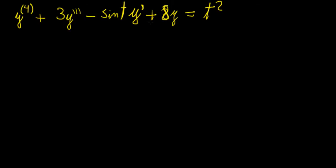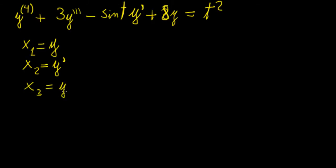Let's do a change of variables first. Let x1 equal y, then x2 equal the first derivative, then x3 equal the second derivative, and x4 equal the third derivative. You might wonder what happens to the fourth derivative of y — that variable is actually contained within x4 because we want a first order system.